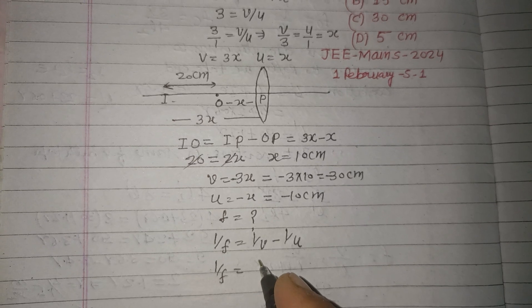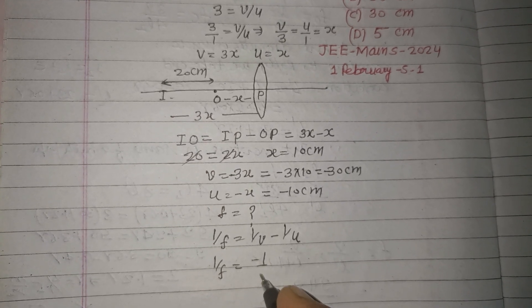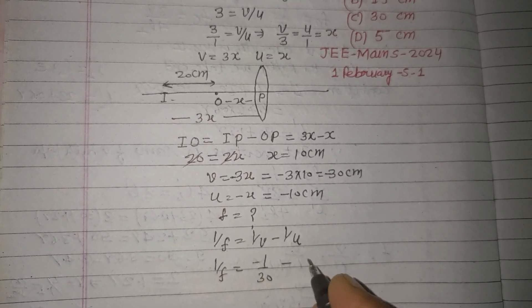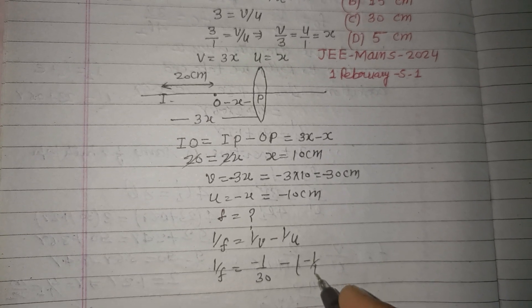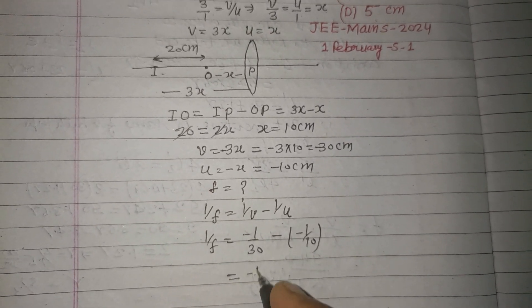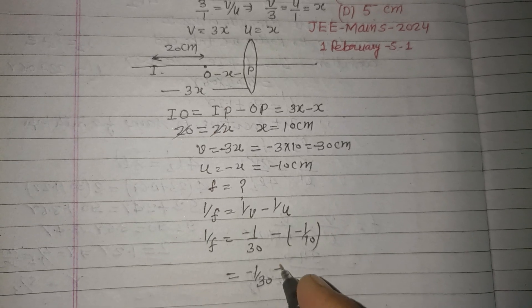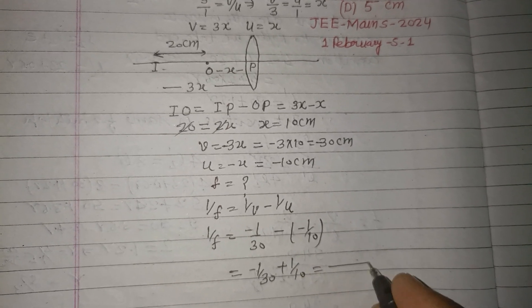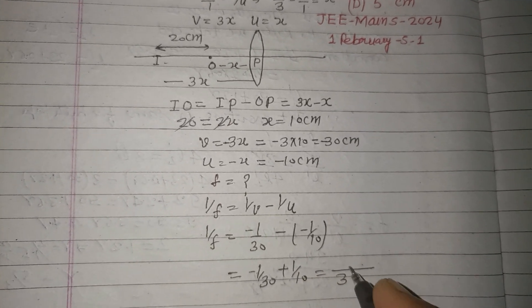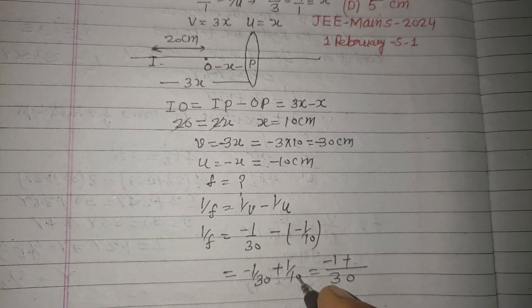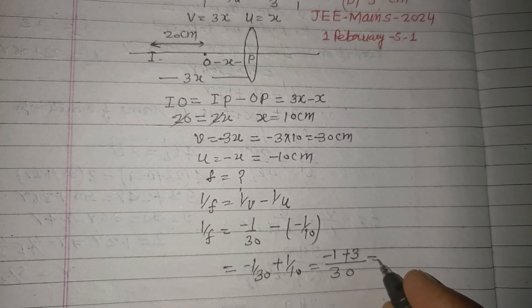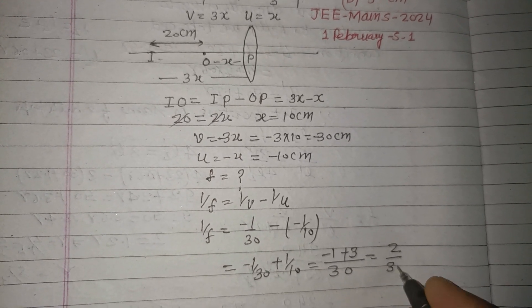So 1 upon f equals minus 1 upon 30 minus minus 1 upon 10. Therefore, minus 1 upon 30 plus 1 upon 10. LCM is 30, so this is minus 1 plus 3, which equals 2, and this will be 2 upon 30.